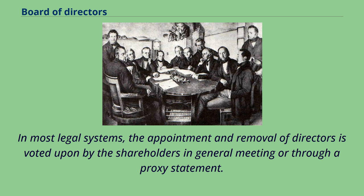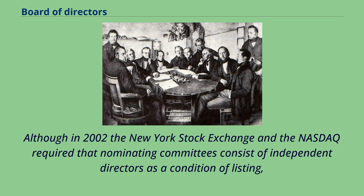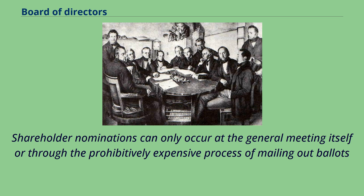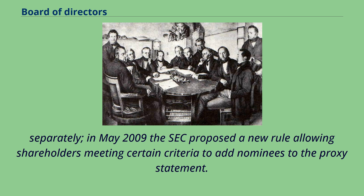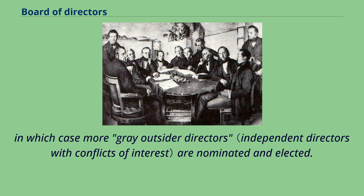In most legal systems, the appointment and removal of directors is voted upon by the shareholders in general meeting or through a proxy statement. For publicly traded companies in the U.S., the directors available to vote on are largely selected by either the board as a whole or a nominating committee. In 2002, the New York Stock Exchange and the NASDAQ required that nominating committees consist of independent directors as a condition of listing. In May 2009, the SEC proposed a new rule allowing shareholders meeting certain criteria to add nominees to the proxy statement. In practice for publicly traded companies, the managers who are purportedly accountable to the board have historically played a major role in selecting and nominating the directors who are voted on by shareholders.